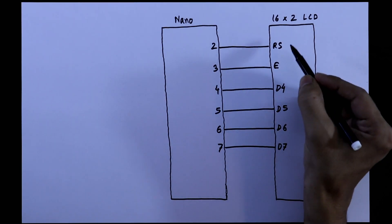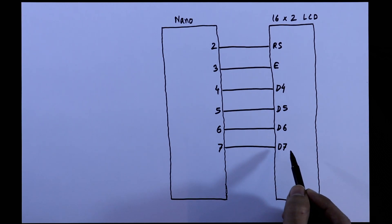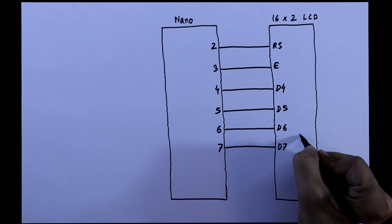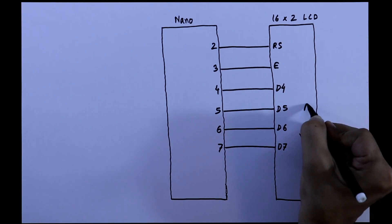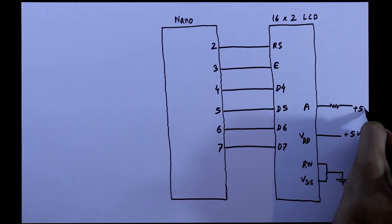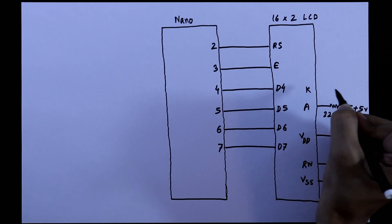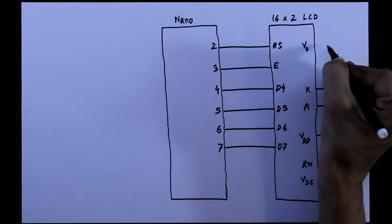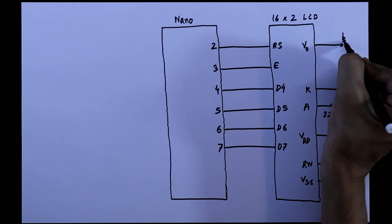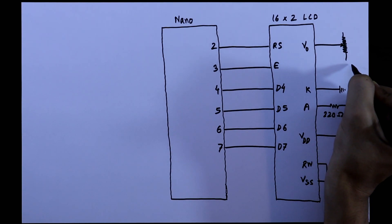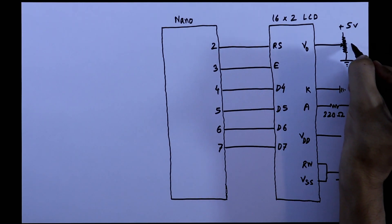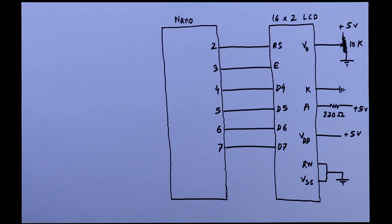These are the Arduino pins and these are the display pins. We have to connect like this. RW and VSS are connected to ground. VDD to plus 5V. The anode of the LED is connected to plus 5V through a 220 ohm resistor, and the cathode is connected to ground. For the V0 pin, we connect it to the middle pin of a potentiometer. One pin of the potentiometer is connected to ground, the other to plus 5V, and the value of the potentiometer is 10K ohms.